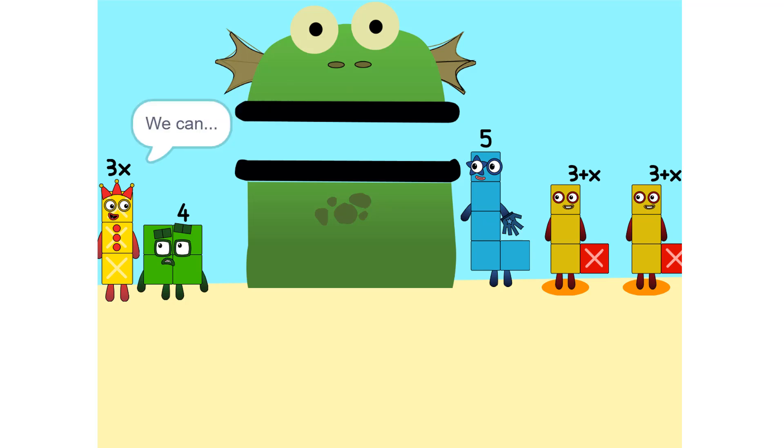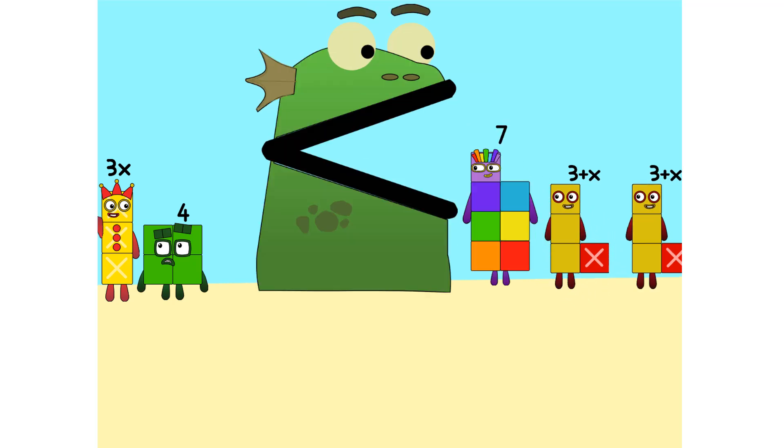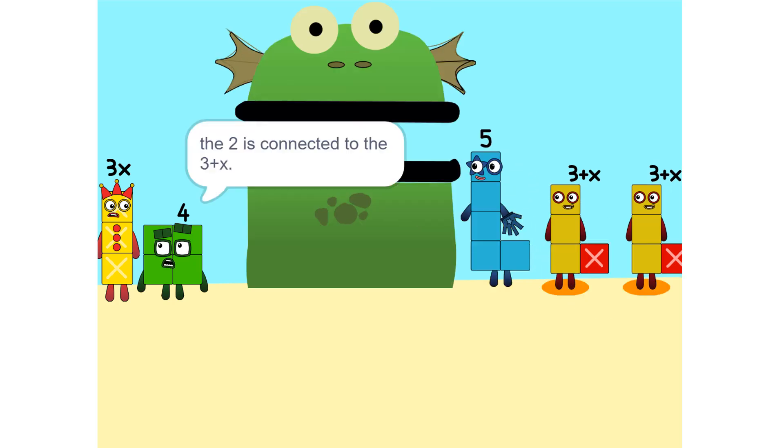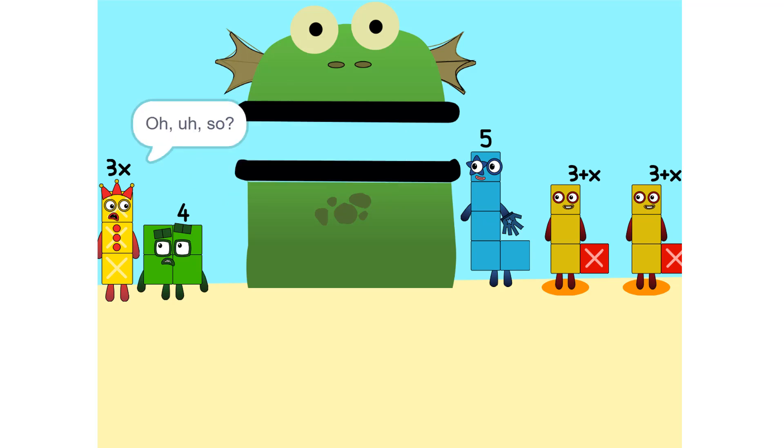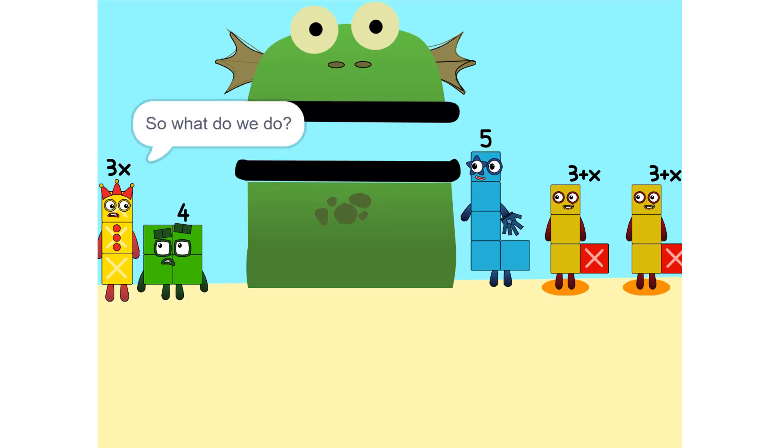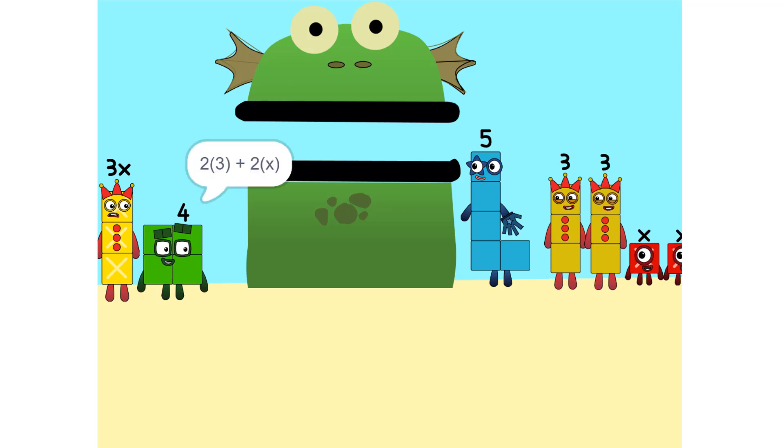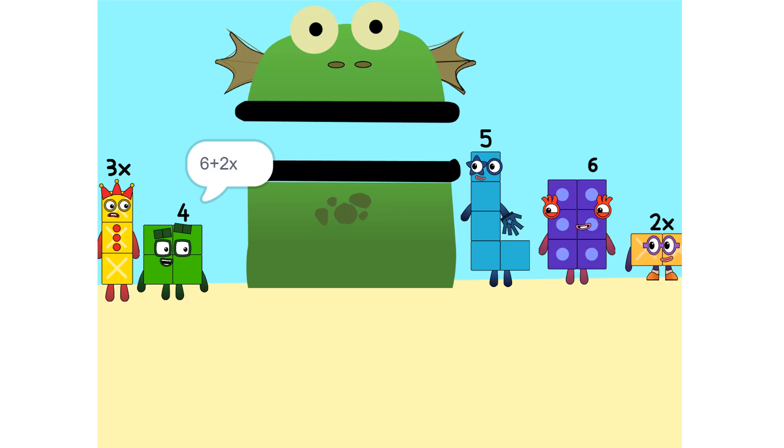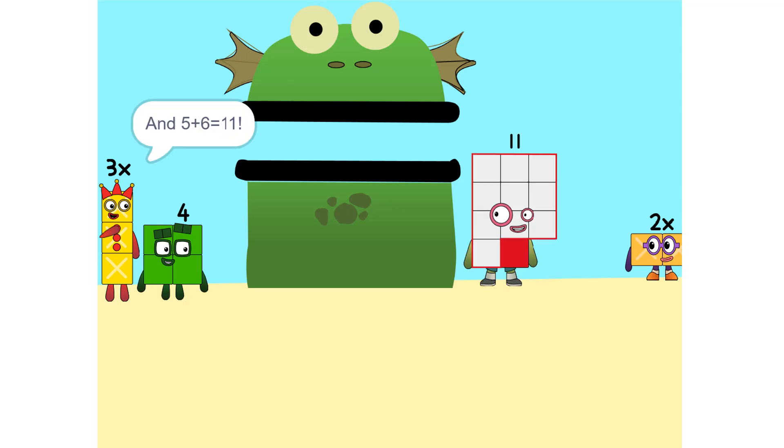I see something. We can add this. Why did that happen? Because the 2 is connected to the 3 plus X. So it's like adding apples and oranges. You can. So what do we do? See the 2 times 3 plus X? That's the same as 2 times 3 plus 2 times X, which is 6 plus 2X.